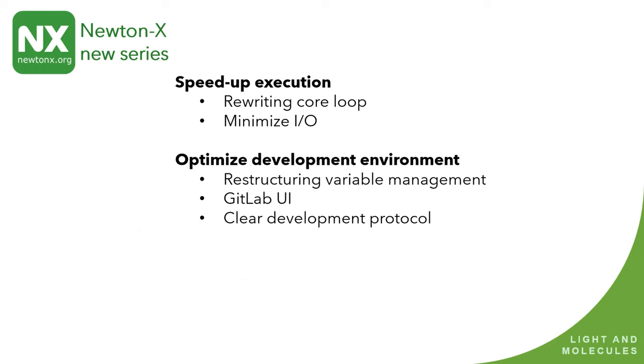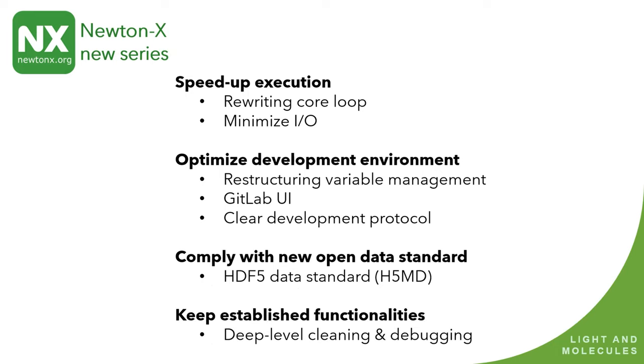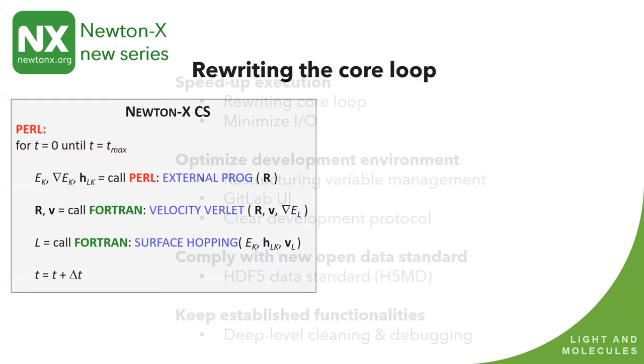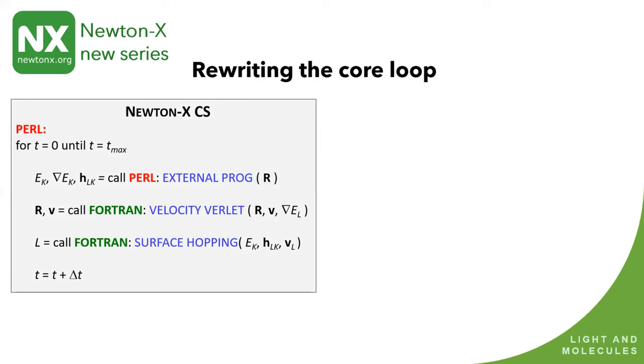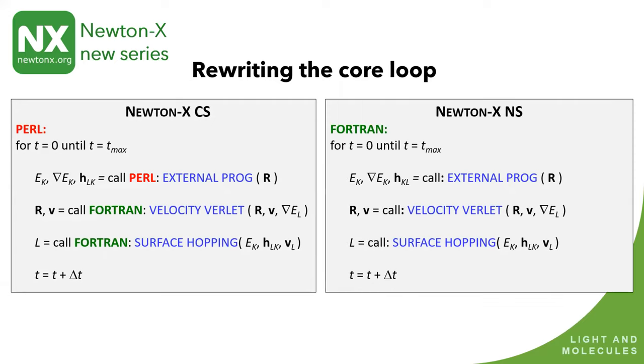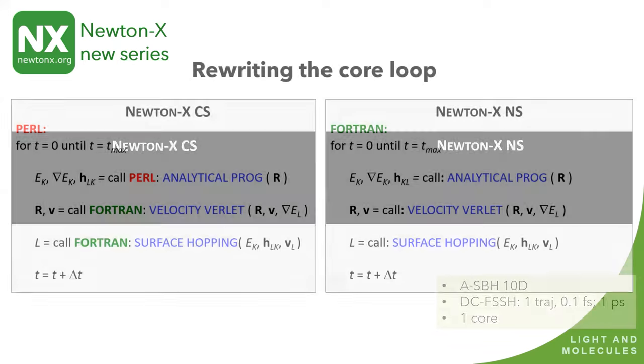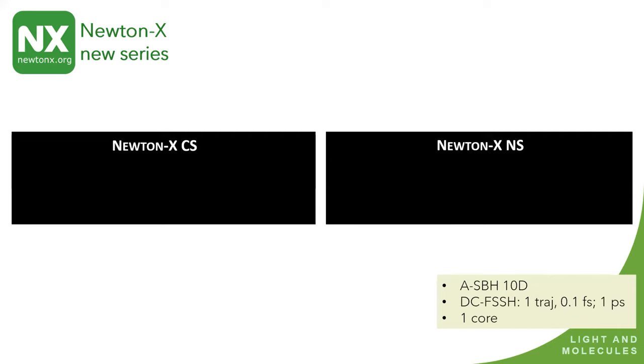In Marseille, we develop the Newton-X platform. That's a surface hopping program that's free, where you can just get it at newtonx.org. You can use many different methods. And we are rewriting Newton-X from scratch. We have a new version that's called Newton-X NS, a new series, where we wrote the core loop of the program. We optimized the development environment, and are complying with new open data standards, and are keeping the previous functionalities of the program. Right now, we have two parallel versions of Newton-X, Newton-X CS, that's the classical series, and Newton-X NS. They are surviving parallel to each other.